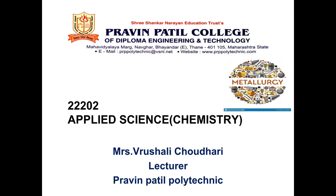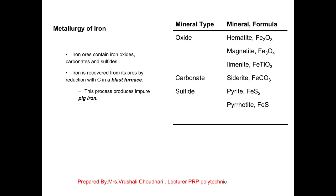The topic is metallurgy. What is metallurgy? Extraction of metal from the ores is called metallurgy. Today we are going to learn how iron metal is extracted from the ore. What is an ore? A naturally occurring substance which contains metal oxide in a higher quantity and from which extraction is economically possible is called an ore.